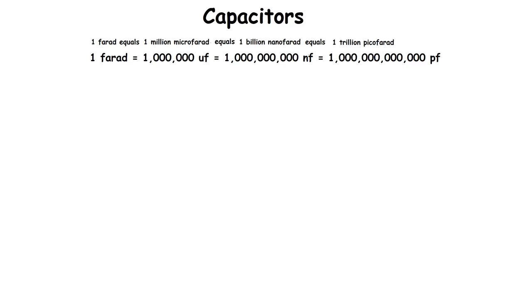We usually talk about microfarad capacitors, nanofarad capacitors, and picofarad capacitors. If we look at the chart, one farad equals one million microfarad, and that equals one billion nanofarad, which also equals one trillion picofarad.